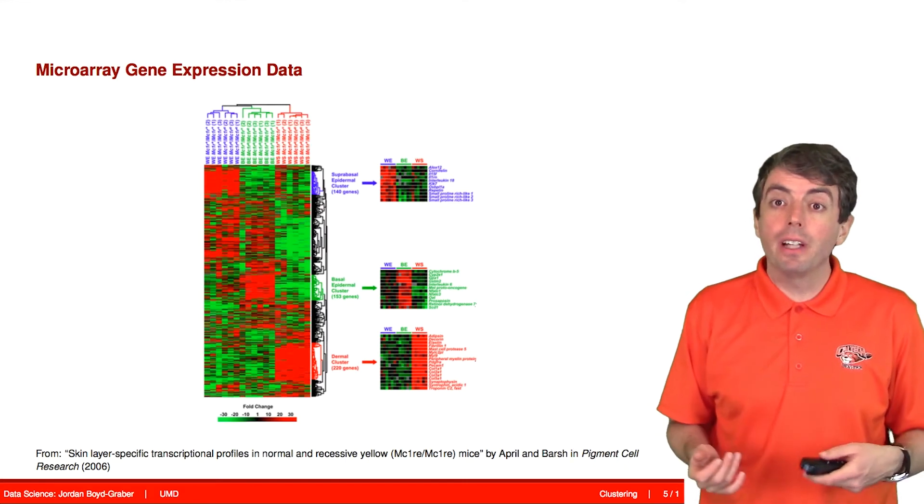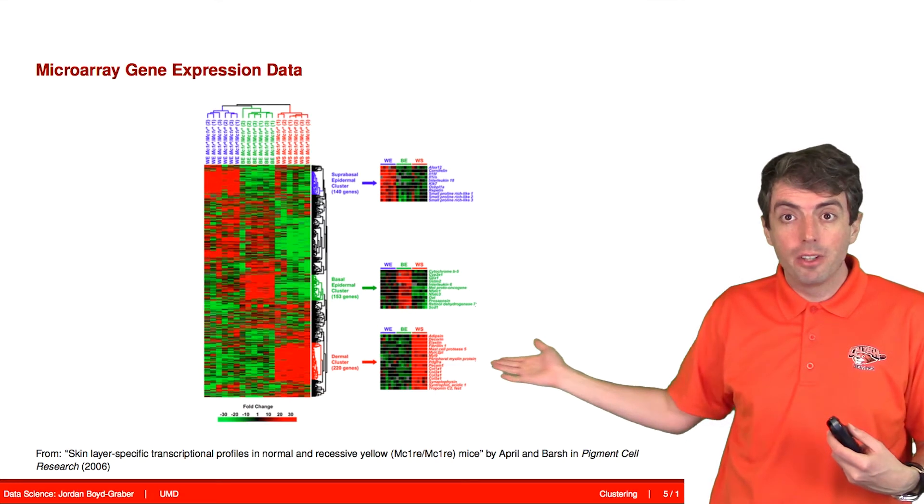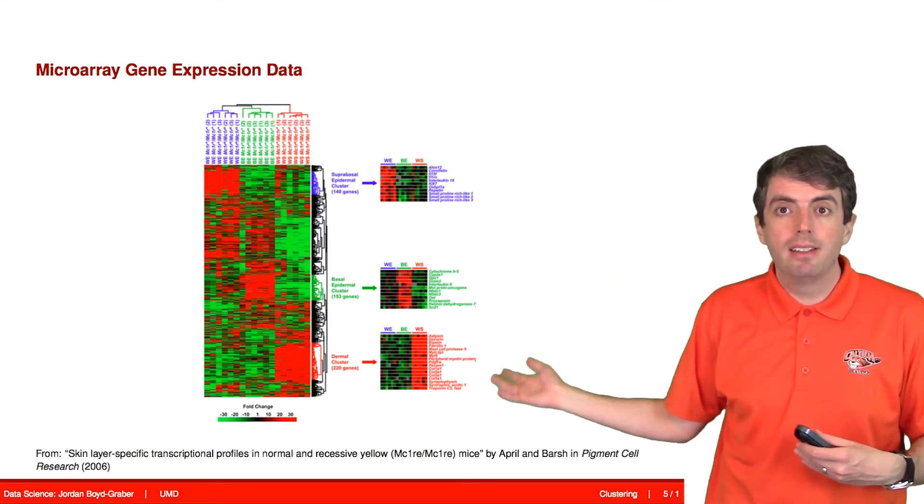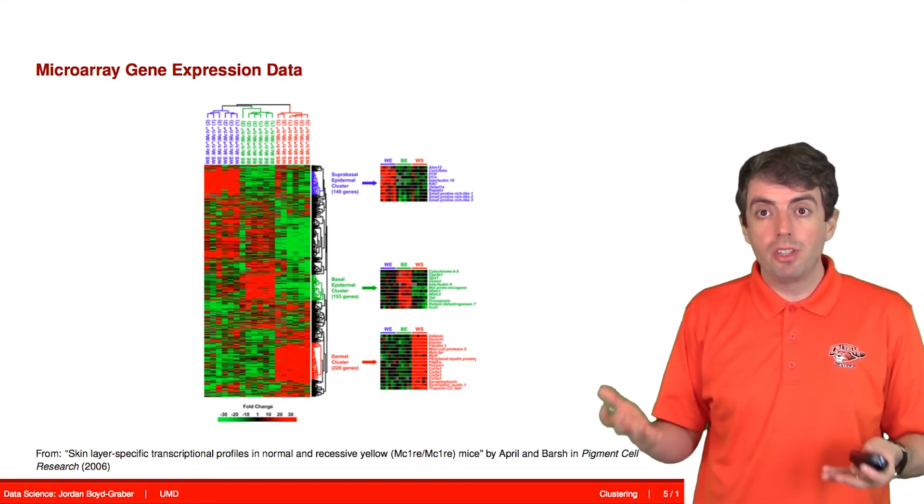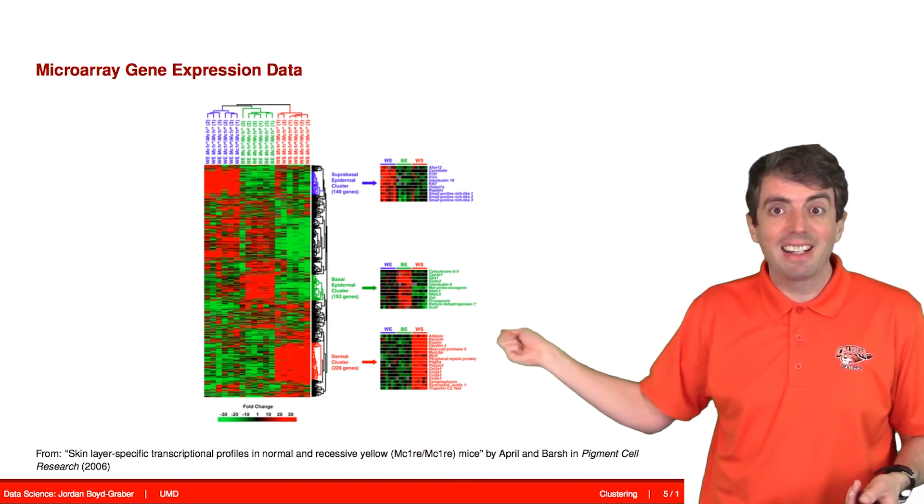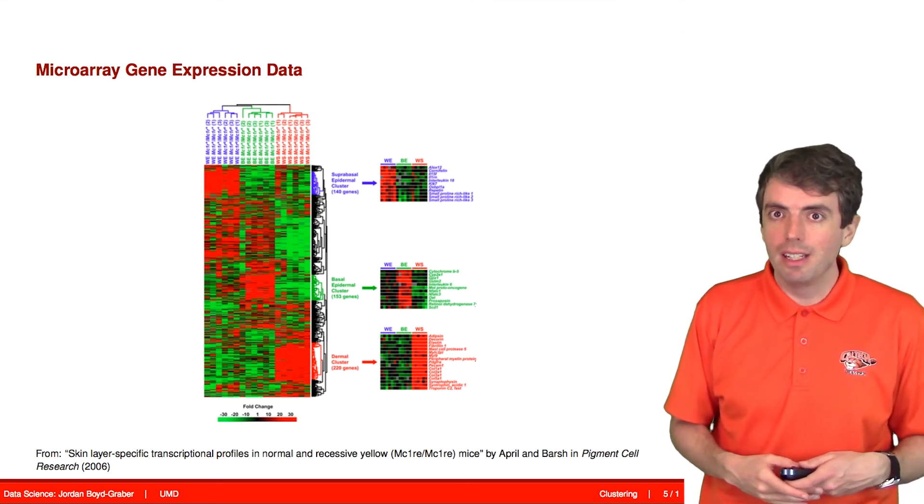One application of clustering is in computational biology, where you have all of your genes in an organism and they respond to different experiments in different ways. If you put similar genes together, you can get a sense of what genes act in similar ways and thus maybe find connections between different genes.